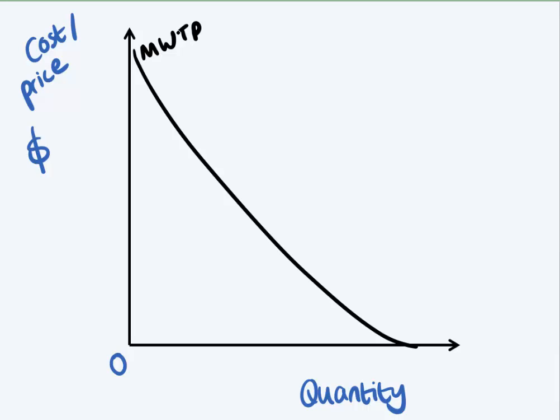So this is your marginal willingness to pay curve. The other side of this is your marginal cost curve. Initially producers have low marginal cost, and that increases as quantity increases.